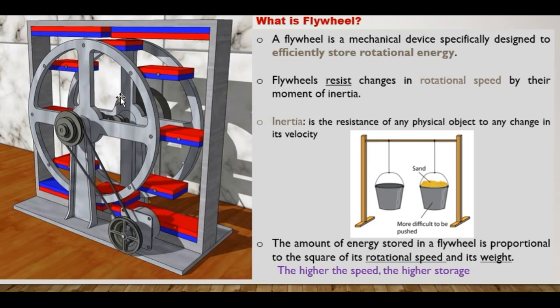A flywheel resists changes in rotational speed by its moment of inertia. On its own, a flywheel resists changes. For instance, if a flywheel is rotating clockwise at a certain speed and you want to turn it anticlockwise, you are going to experience very big resistance, because as it moves clockwise you cannot easily turn it anticlockwise. That is why we put a flywheel in — it resists changes in rotational speed by its moment of inertia.